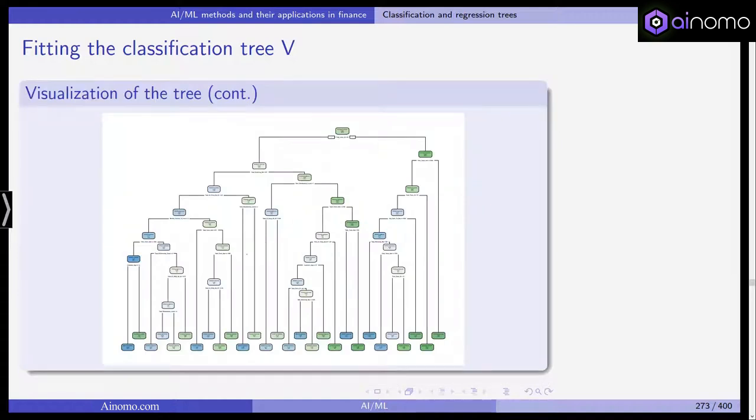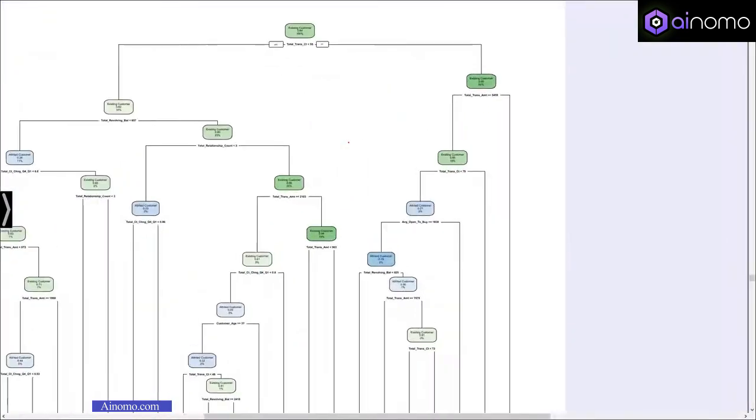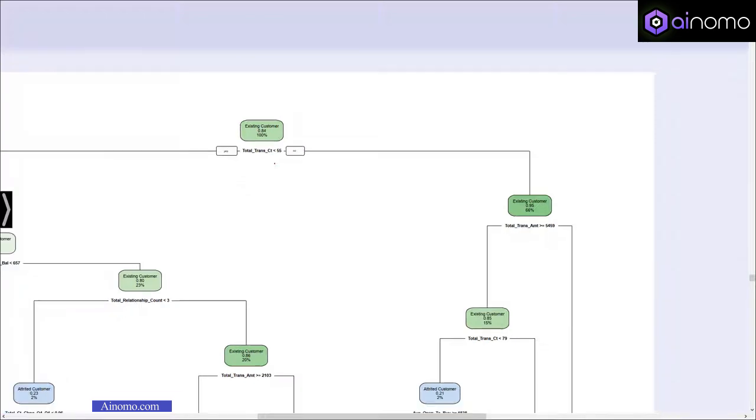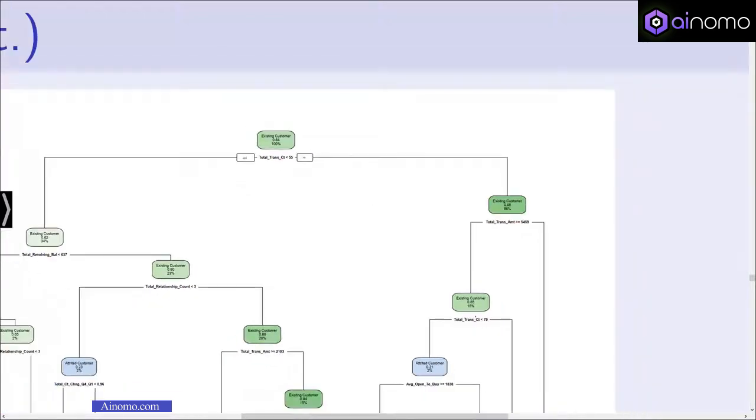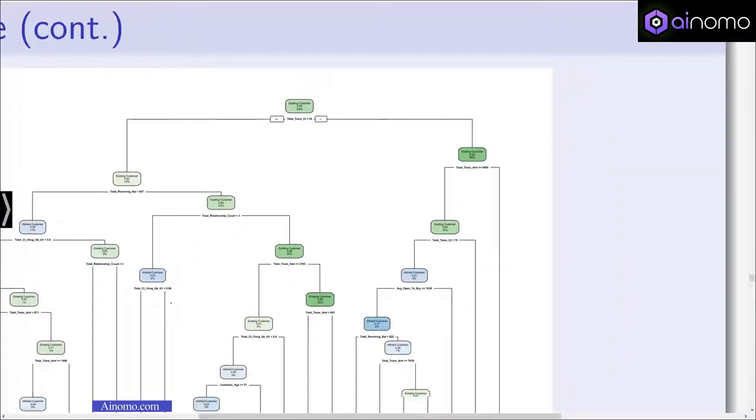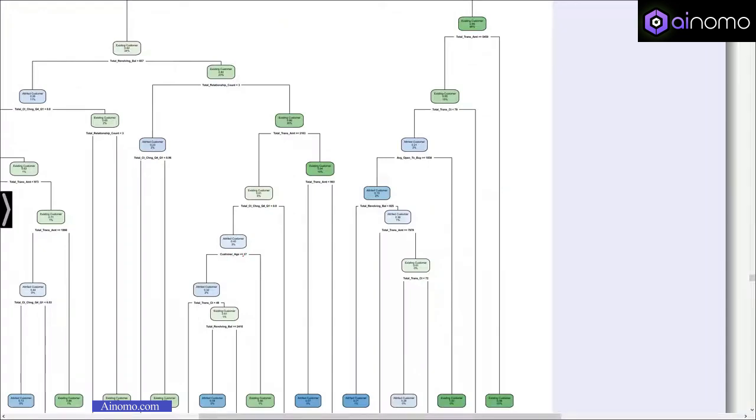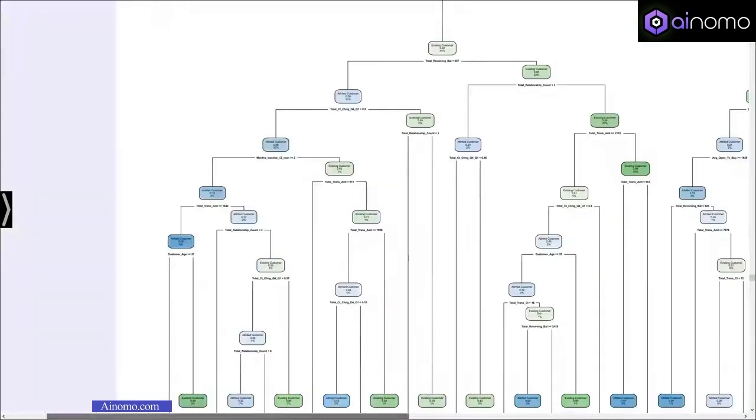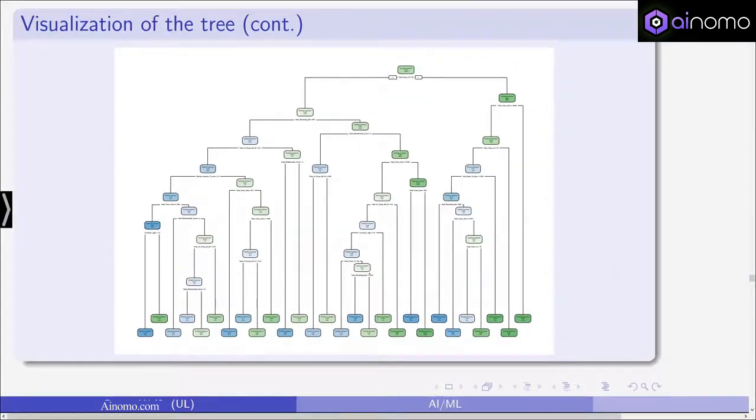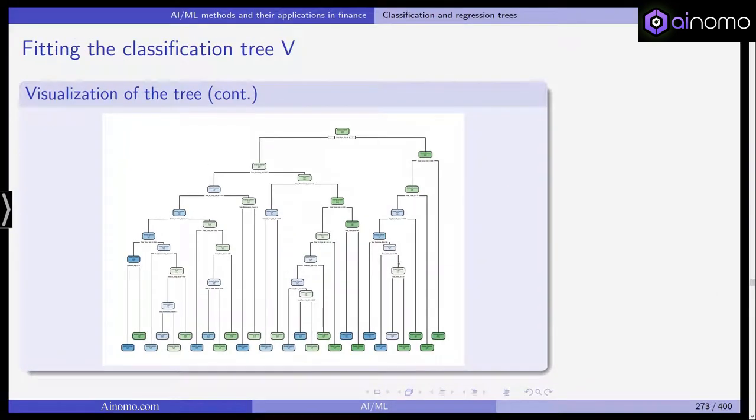We need rpart dot plot as the package, and then we can plot it. The result is shown on this slide. If you have the slides, you can zoom in here. We start out with existing customer, and we have 100% total trans CT and total trans AMT, total transaction, total relationship count. You can see those numerous features we have. Customer age is quite clear. Customer age being greater than or equal to 37, total revolving balance. These are all the cutoffs. In the end, you get a tree that looks like this.